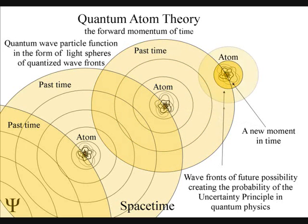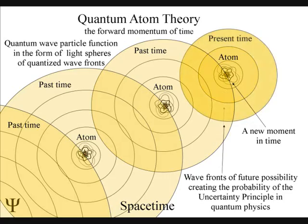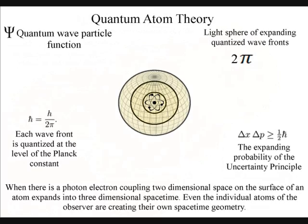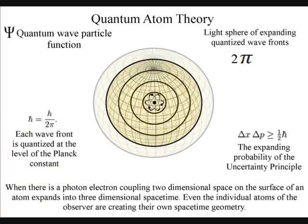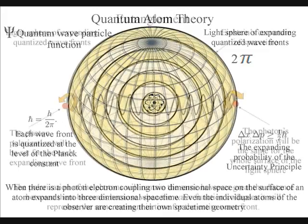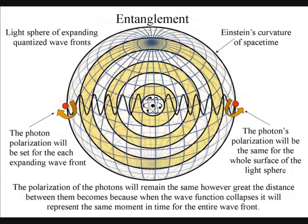Light always takes the simplest and most efficient path, expanding out in all directions, forming light spheres. The polarization of the light will be the same for the entire surface of the light sphere, creating quantum entanglement and the symmetry and geometry of spacetime.